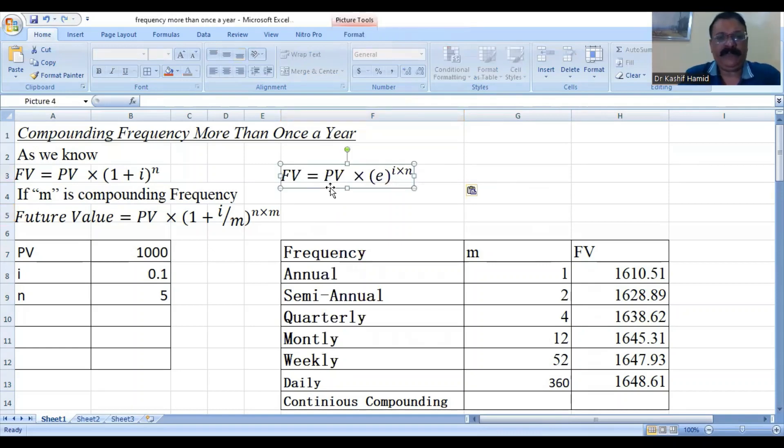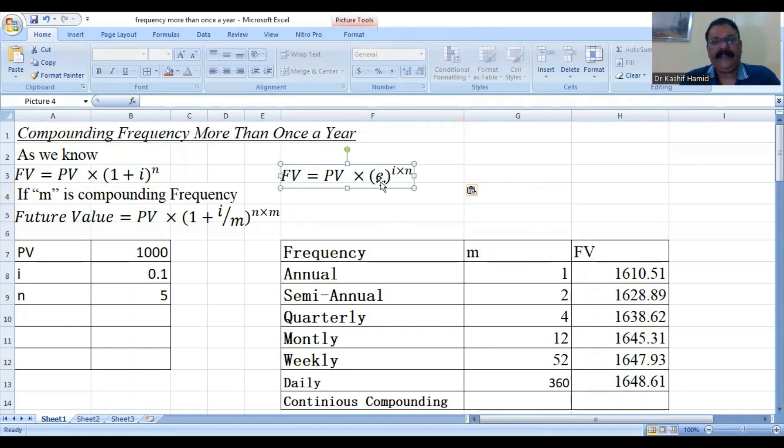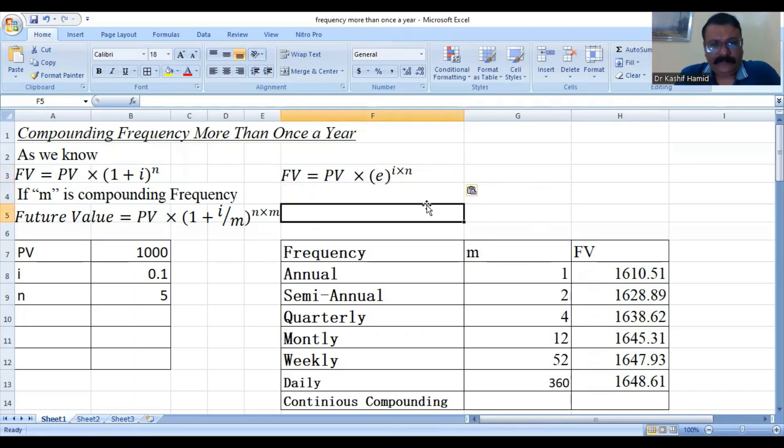For E value, our computation is future value is equal to present value multiplied e raised power i multiplied n. In this situation, if we use this formulation, I highlight it by this computation. Let's compute.